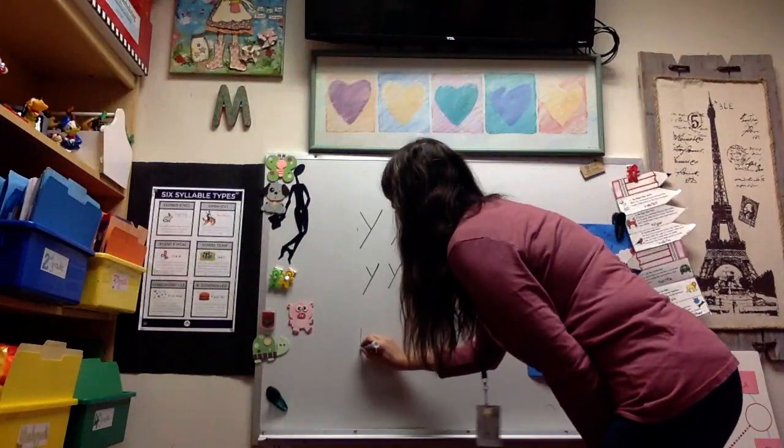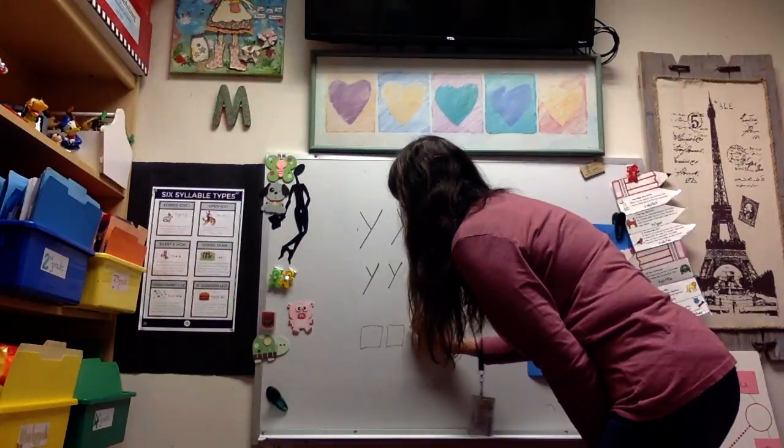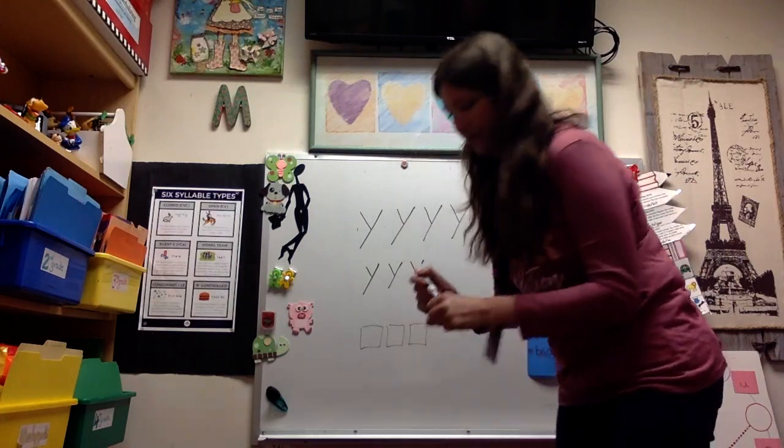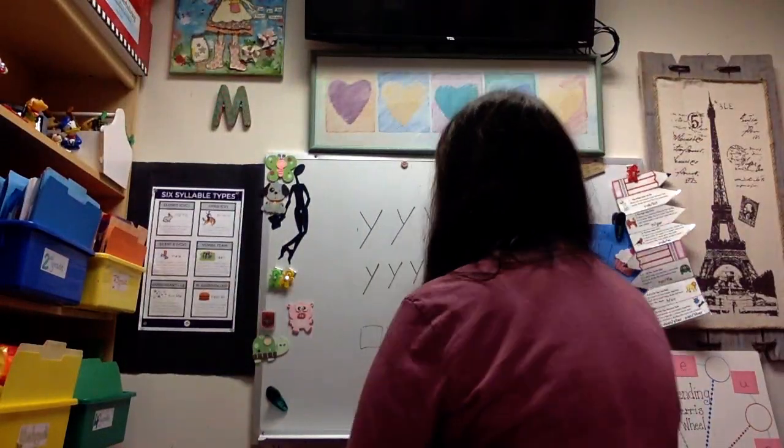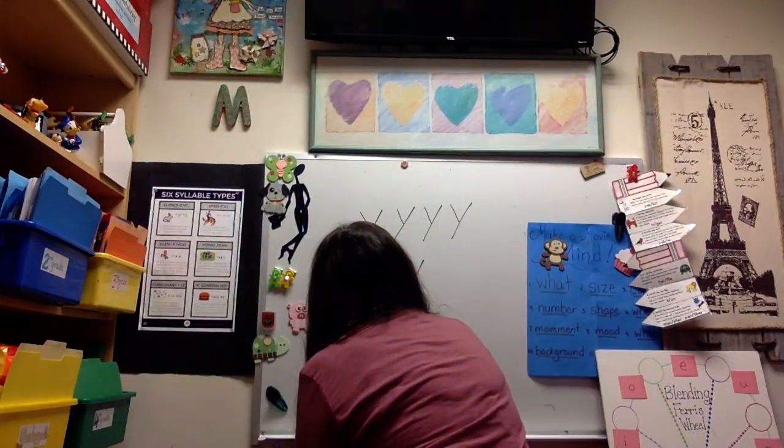Let's do one phoneme grapheme mapping with the letter Y. We're going to do the word yes. Ready? Yes — yuh, eh, ss — three sounds, so we need three boxes. First sound: yuh. Hand on your throat — yuh, it vibrates, it's voiced and stopping. Letter name Y. I'm going to make a lowercase Y and it drops down below the box, just like it has a monkey tail.